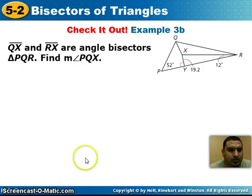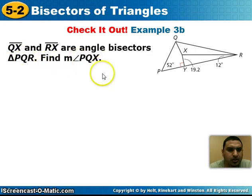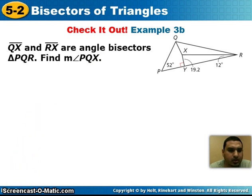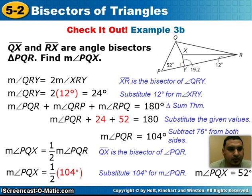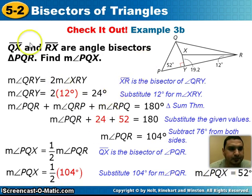We have one more example. Segments QX and RX are angle bisectors of triangle PQR, and we want to find the measure of angle PQX. Pause the video and try it on your own. The measure of angle PQX is 52 degrees. This concludes our notes over bisectors of triangles.